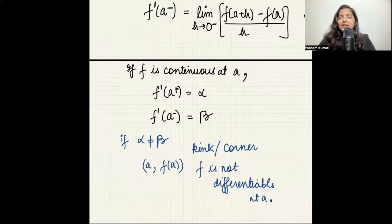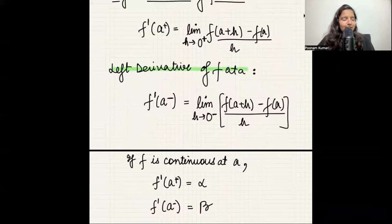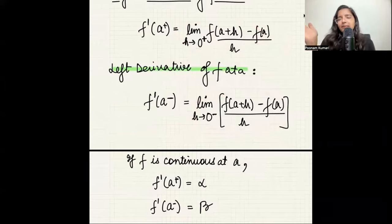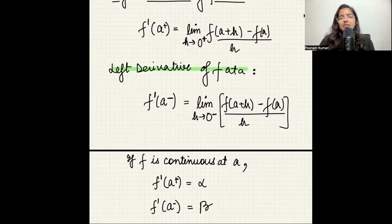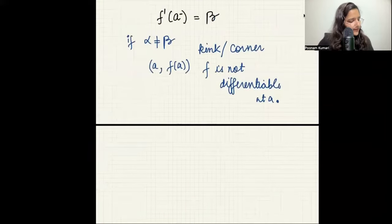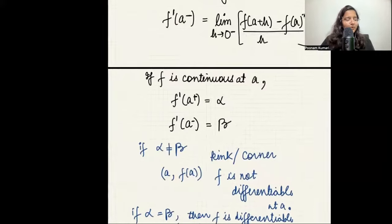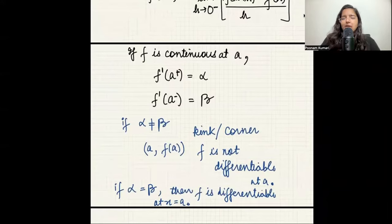The other case: if alpha equals beta — meaning the right derivative and the left derivative give the same value — then your function is differentiable at point a. There are no corners, no kinks. This is how you determine whether a function is differentiable at any particular point: it must be continuous, and the left and right derivatives must be equal.